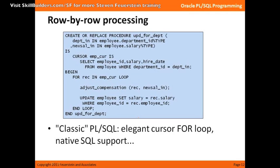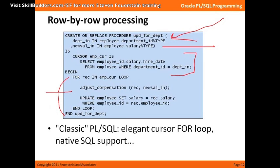Row-by-row processing is something not to do. Here's a really classic piece of PL/SQL, mostly because it's also using the same department employees that we all know so well. I pass in a department ID and the new salary for the employees. I find all the employees in the department, and for every one of those employees, I have some complex adjustment calculation, and then I update the employee with their new salary.